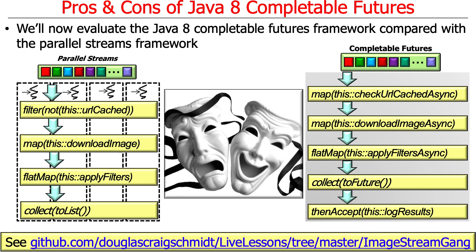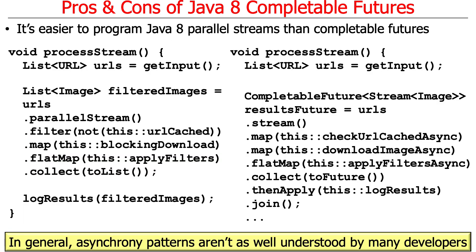There is a difference in the amount of code you write and the level of complexity. The parallel streams code is pretty simple — it's a bunch of synchronous calls partitioned up by the underlying fork-join pool. The completable futures code is simpler to read, but you'd have to write it yourself to see how complex it really is. These stages are more complicated to write, more complicated to debug, and more complicated to reason about. Part of the challenge is we just don't think about asynchrony as well as synchrony, although completable futures makes it a lot easier.